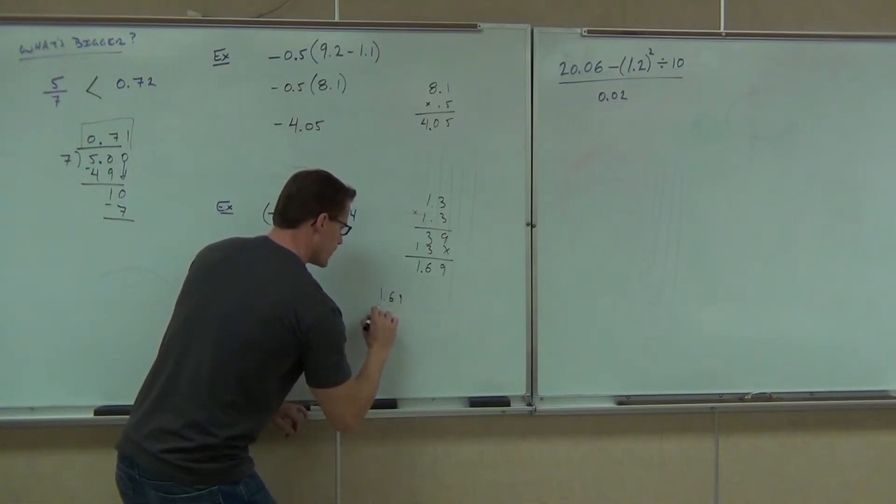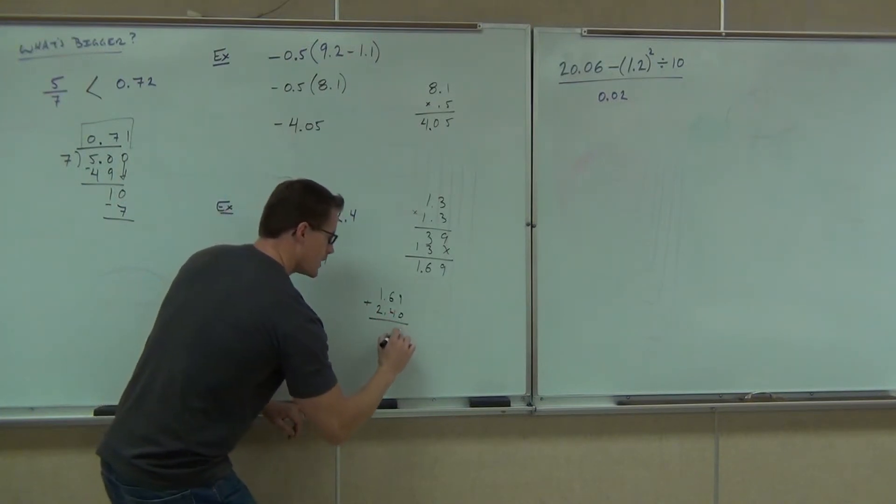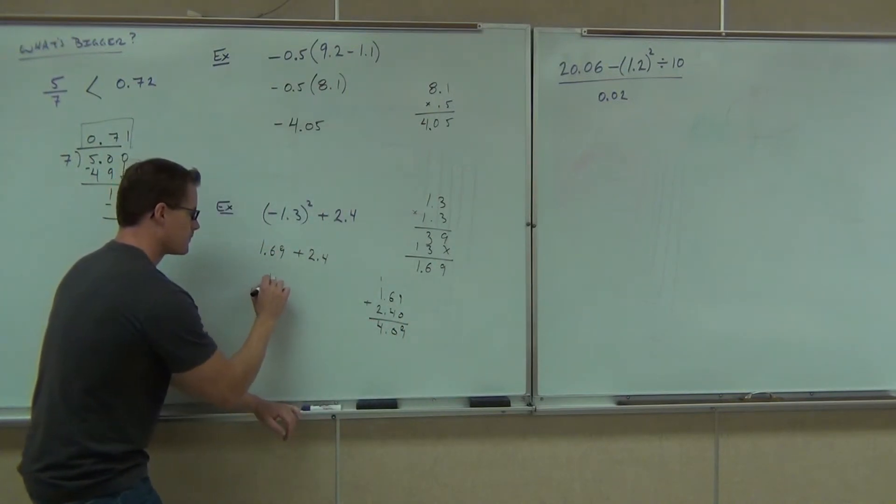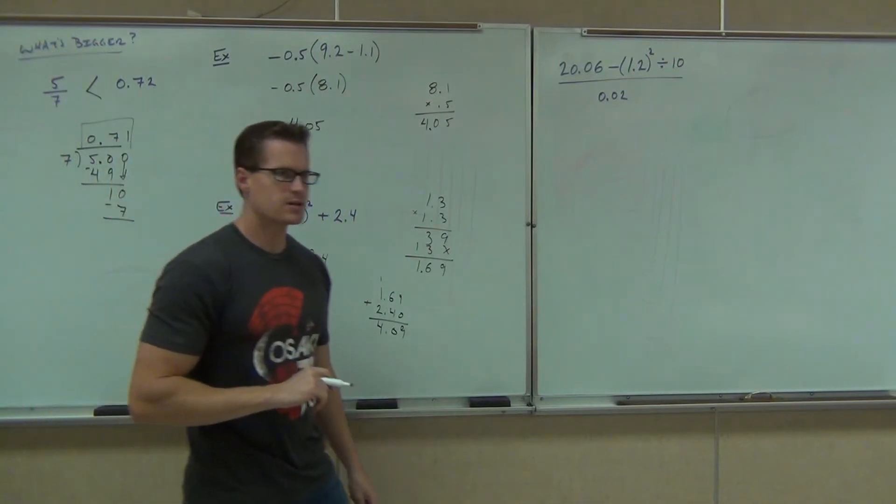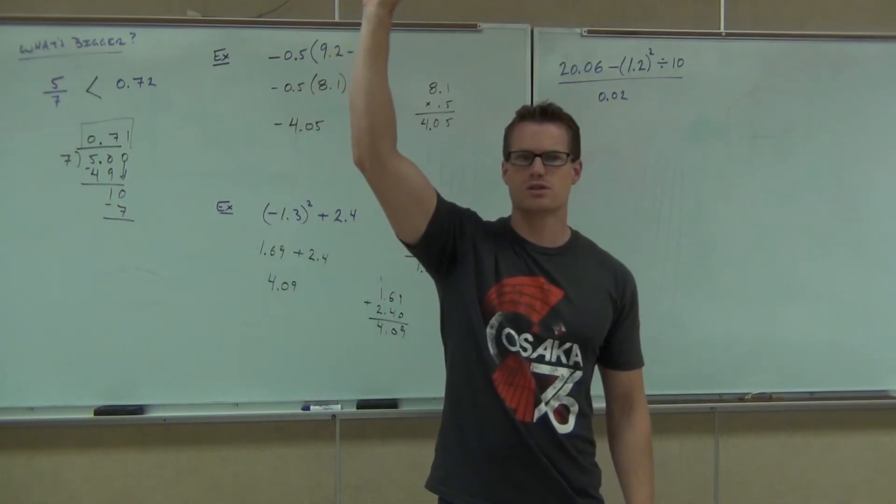1.69, 2.4. Of course, we're lining up our decimal place. That's going to be a 9, a 0. We'll carry 1. You get 4.09. That's right. Not too bad. How do you feel okay with our operations so far? Good.